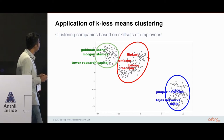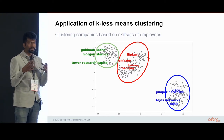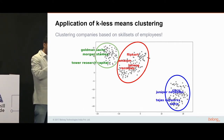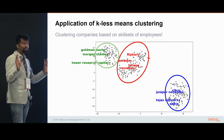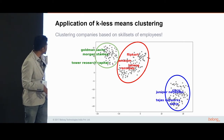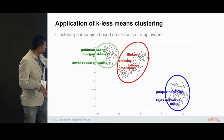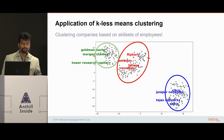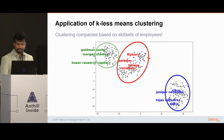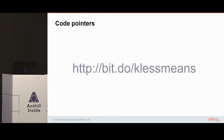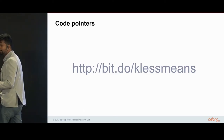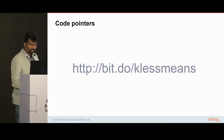We applied this in our company to identify similar companies by looking at the skill set of employees within those companies. Take the skill set of employees within a company and represent it as a vector. When you do the KLS-means clustering, you can see that similar companies come together — Goldman Sachs, Morgan Stanley, and Tava Research cluster together; Cisco, Juniper Networks, Tejas Networks, etc., come together. This is powerful because it's hard to know how many different kinds of companies exist and set the right value of K. The code is available at bit.do/KLSmeans.